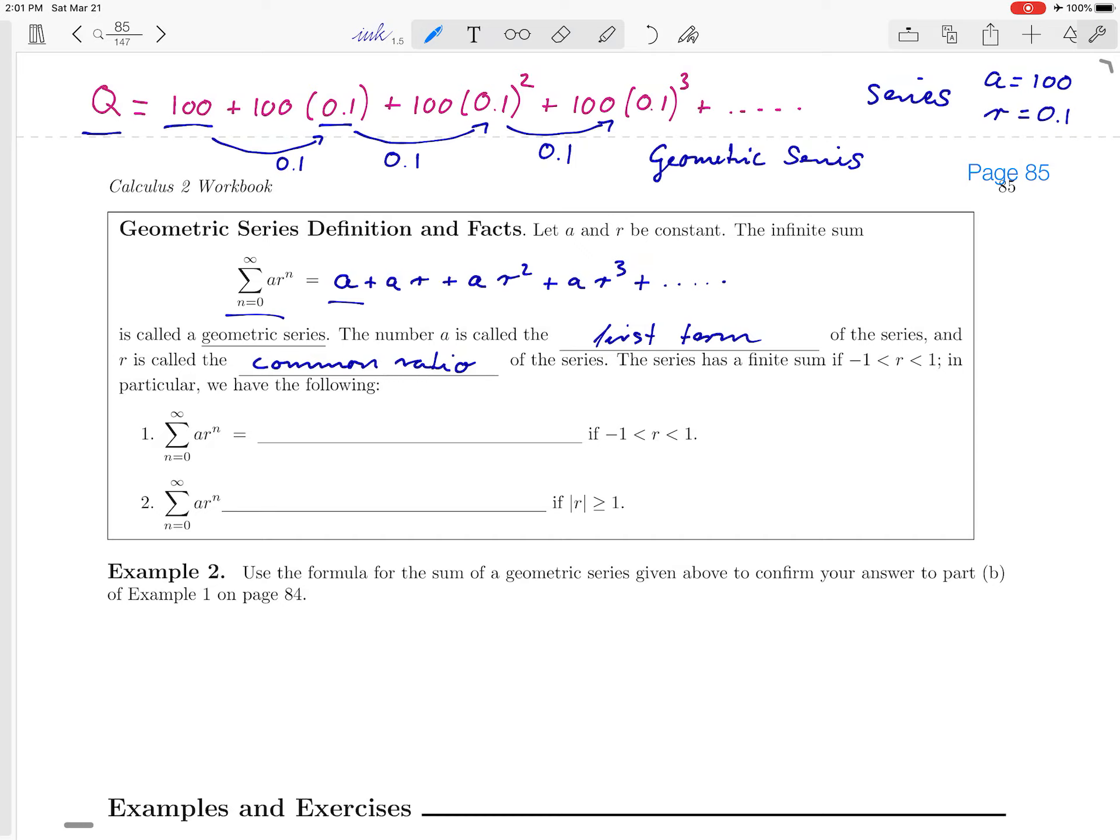The series will have an infinite sum if this common ratio is between minus one and one and not if it's not. So we have that the sum, we can actually figure out what the value is if r is between minus one and one. And it turns out that it's a, the first term, divided by one minus r. So in this case, the series converges because it takes on a finite number.